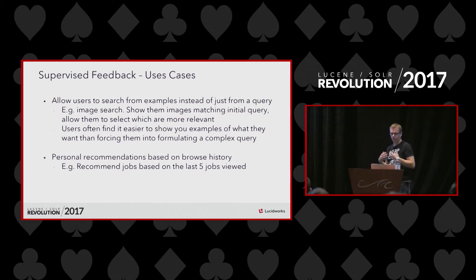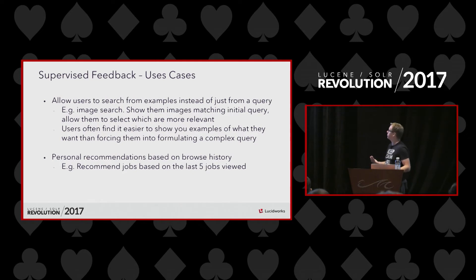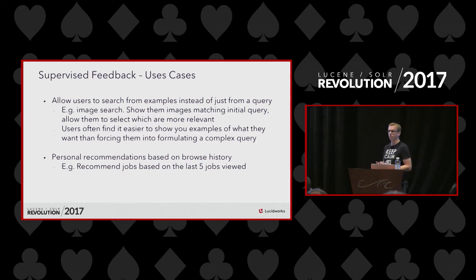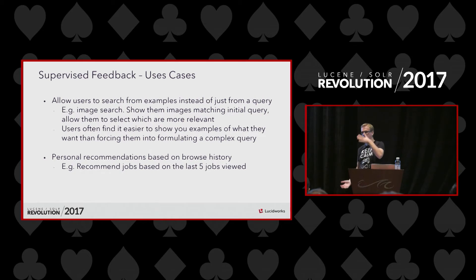Some use cases of relevancy feedback: you can allow users to search from examples instead of just a query — they type their initial query, then use documents they found relevant to re-execute the search. People often find it easier to show examples of what they like than to formulate a query. Another thing you can do is personal recommendations from someone's browse history — take the jobs they've browsed, feed them into the relevancy feedback handler and get matches. It can take multiple documents: the TF-IDF weights are aggregated over all documents passed to it.